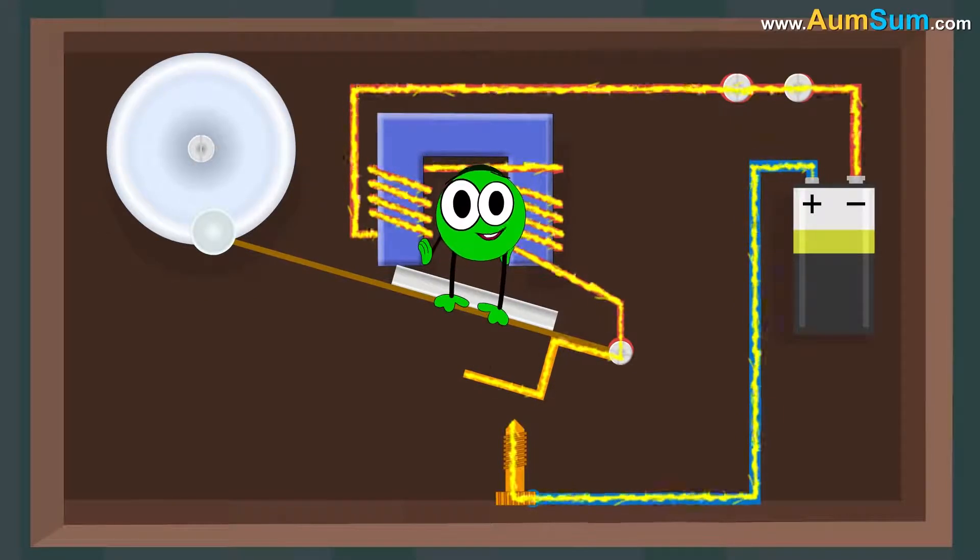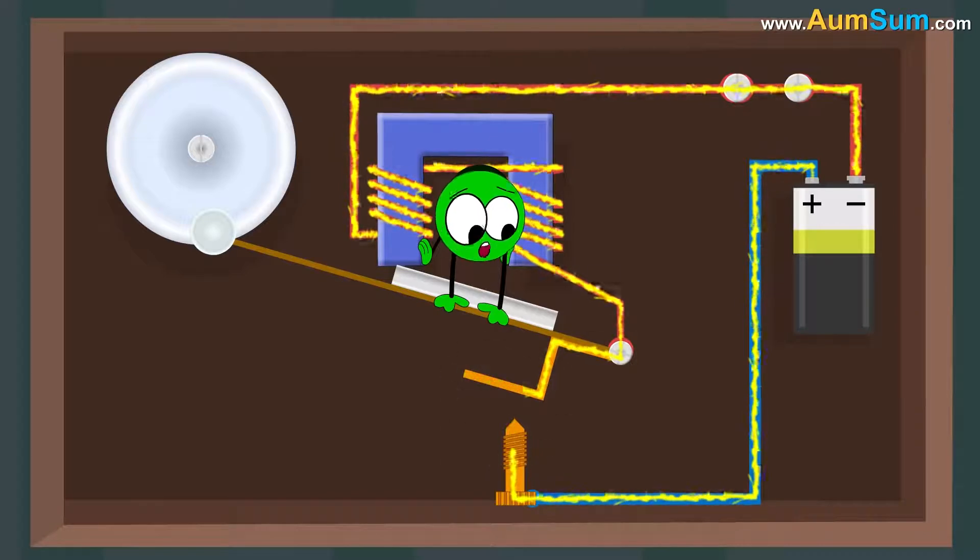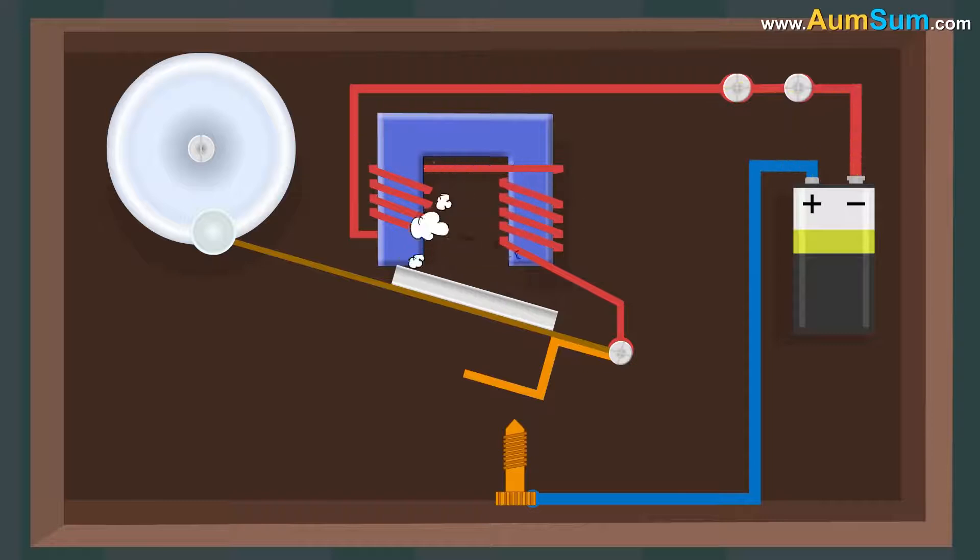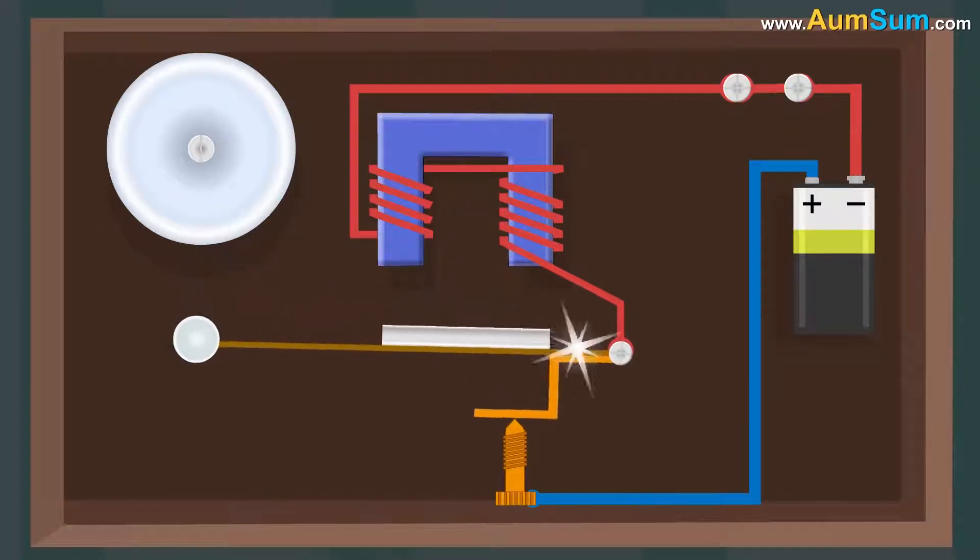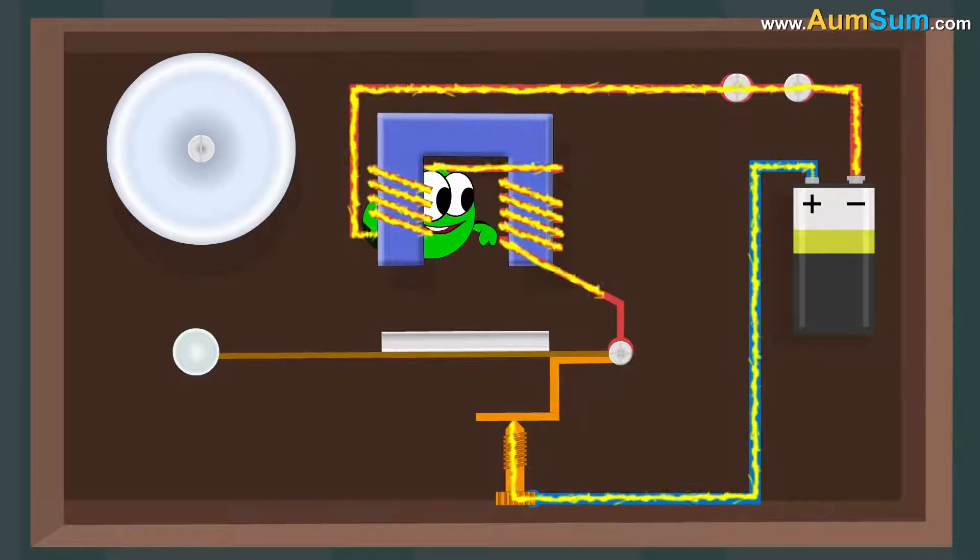Now, this movement of the arm also leads to the opening of electrical contacts. This interrupts the current to the electromagnet and causes collapse of the magnetic field, causing the clapper to move away from the bell. Now, this movement of the arm leads to the closing of the electrical contacts again. Thus, the cycle starts repeating itself.